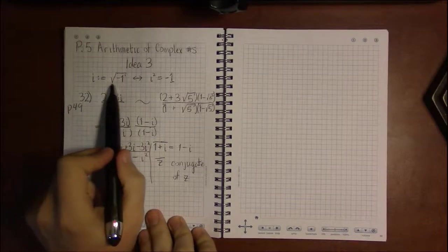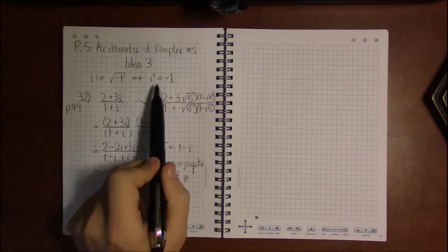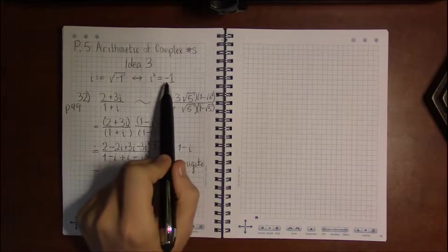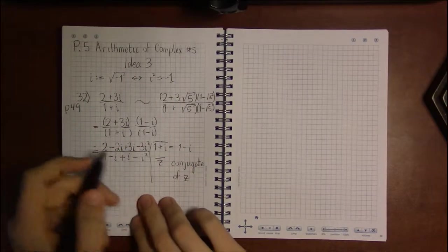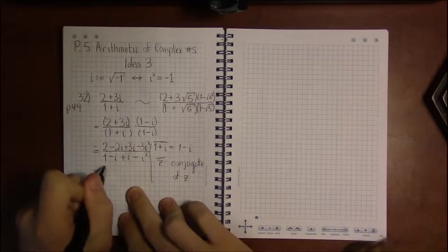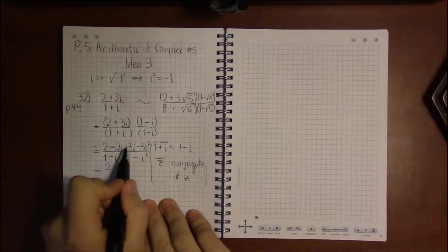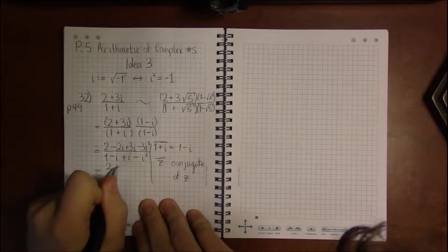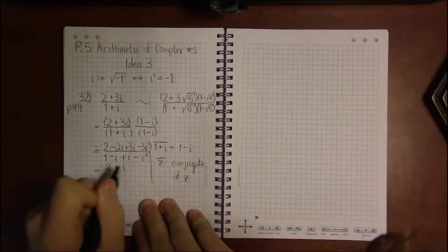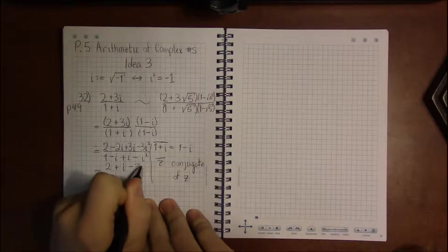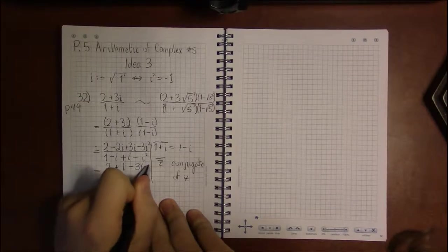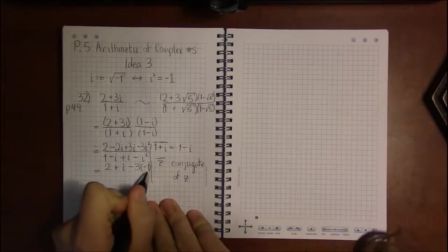Now, remember that since i is square root of negative 1, i squared is negative 1. So this becomes 2. These two combine, minus 2i plus 3i. I just have 1i left. And then minus 3i squared becomes minus 3 times i squared is minus 1.